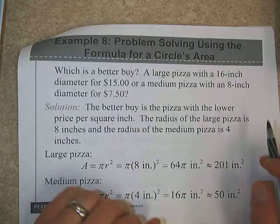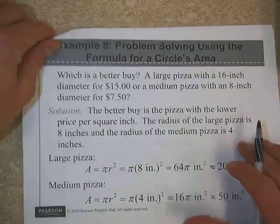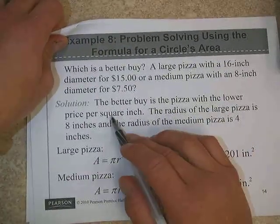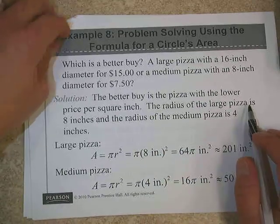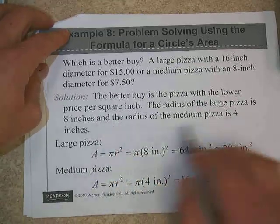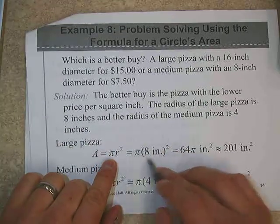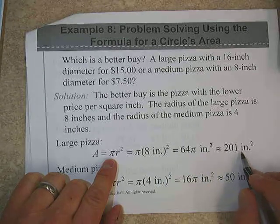One other problem here we're going to do with areas. We want to know which is a better buy. We've got a large pizza, 16-inch diameter, it's $15. We've got a medium pizza that's 8-inch for $7.50. So ultimately, we want to know the better buy is the one with the lower price per square inch.